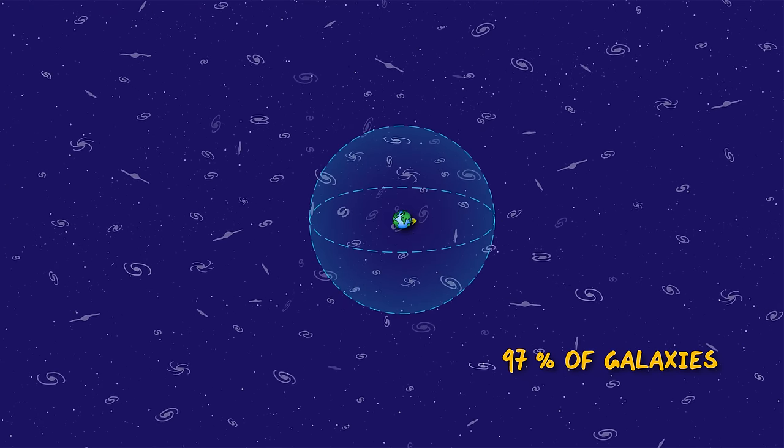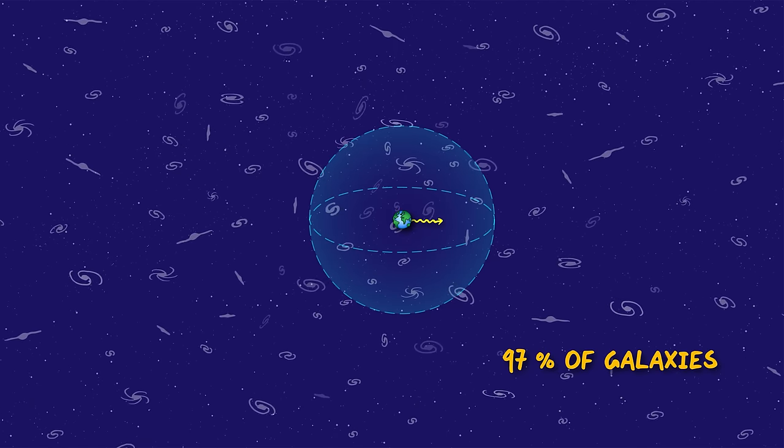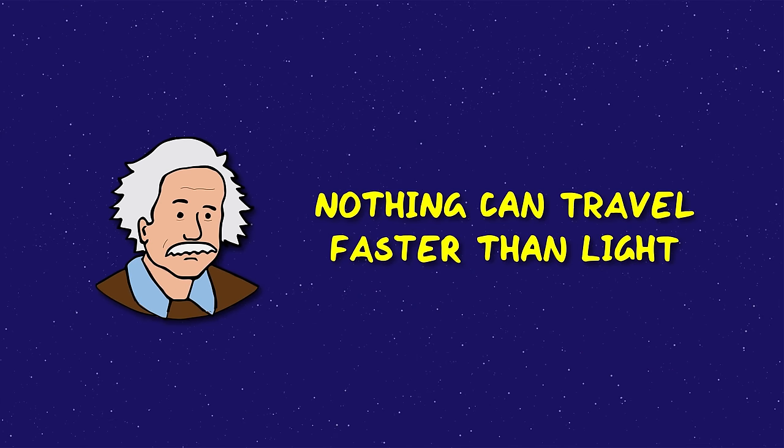97% of the galaxies in the observable universe are moving away from us faster than the speed of light. But how can this be true when one of the unbreakable laws of the universe is that nothing can travel faster than light?